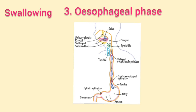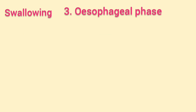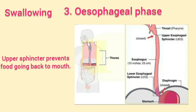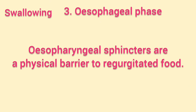Both esophageal sphincters — upper and lower — open in response to the pressure of the food bolus and close after it passes. The upper sphincter prevents food or saliva from being regurgitated back into the mouth. The lower esophageal sphincter ensures food remains in the stomach, preventing regurgitation back into the esophagus. Together, the esophageal sphincters serve as a physical barrier to regurgitated food.